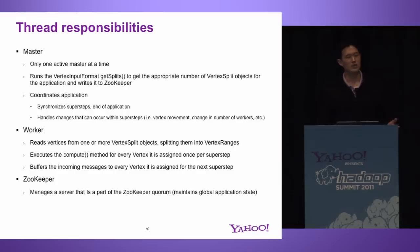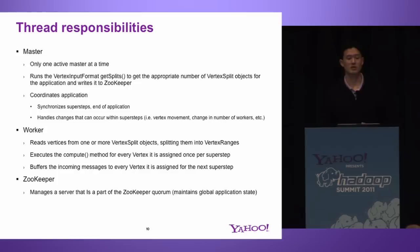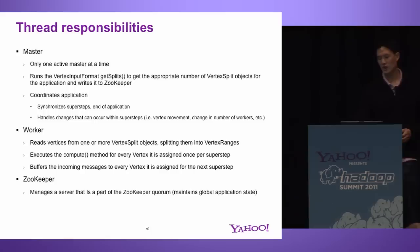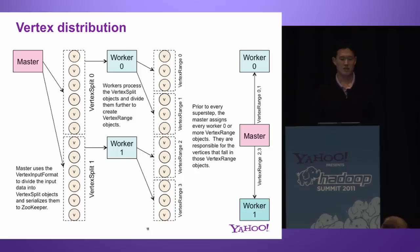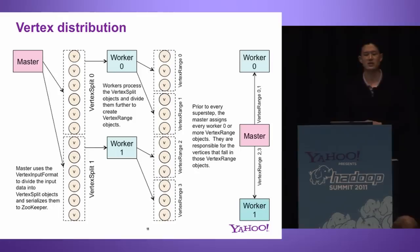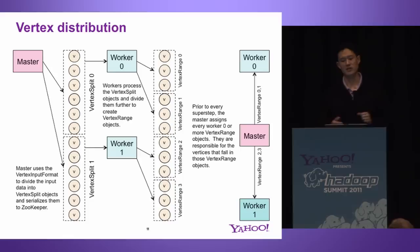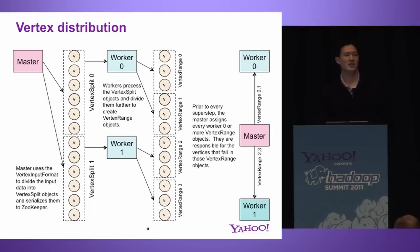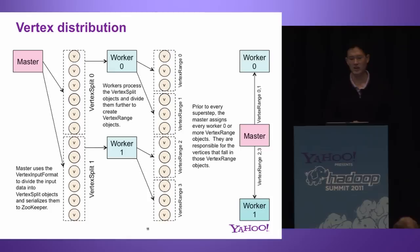The worker task is quite simple — it's responsible for reading vertex splits into memory, executing the compute function for every active vertex, and buffering incoming messages sent during the previous super step. Zookeeper is used to maintain global application state and provide coordination between threads. The way our distribution works: you provide a vertex input format, the data is divided into vertex splits similar to input splits in Hadoop, and workers then read one or more vertex splits and process them into smaller pieces called vertex ranges. This granularity allows us to move them from one worker to the next, or spread vertices more fairly across workers if more become available.